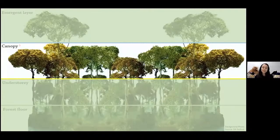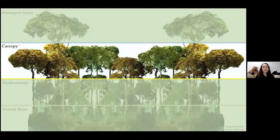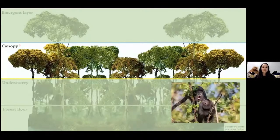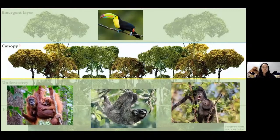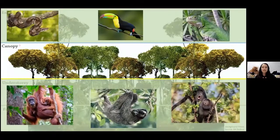Moving on to the canopy layer — this also receives plenty of light and rain, but as you can see, it is much more crowded. It forms a forest roof over all the other layers. There is lots of food here, filled with nuts and sweet fruit, so it is home to lots of different animals including monkeys, apes, toucans and other birds, sloths, snakes, and many, many more.